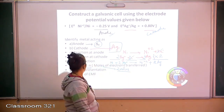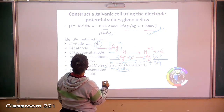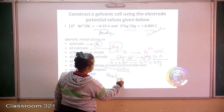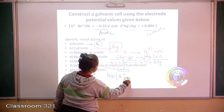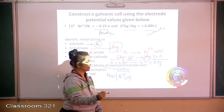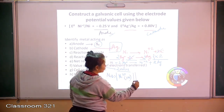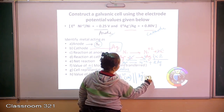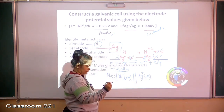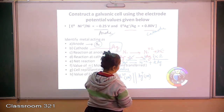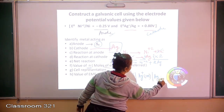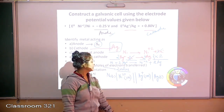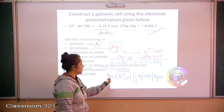For the cell representation, we begin with the anode which is nickel in contact with nickel ions — I'm taking it to be 1 molar because we are talking about a standard cell. Then you have a salt bridge, which is in contact with the silver ions, again 1 molar under standard conditions. Beyond this we have the silver metal. The anode is always on the left and the cathode on the right.